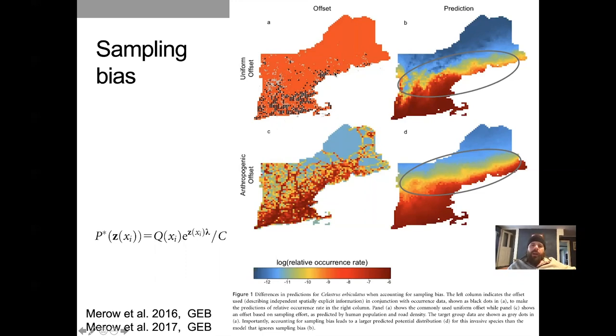And so here's an example of how we can do this. So if we use a uniform offset, this is kind of the traditional Maxent way, and here are presence locations of two different types across the landscape, the black and the gray dots are just different data sources. And if we also compare that to a model in which we use this anthropogenic based offset to say that samples are most likely to come from places that have lots of people or lots of roads, you can see that we get a fairly different prediction where this is an invasive species that can actually potentially has suitable habitat further north than we would have expected otherwise. So it can have pretty significant implications under predictions. And this is all detailed in this 2016 paper where I work through this example.